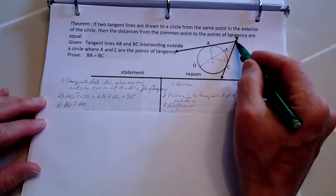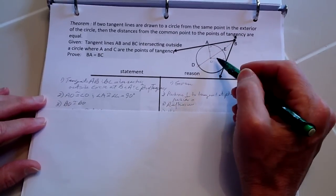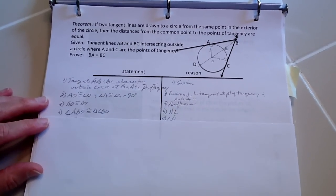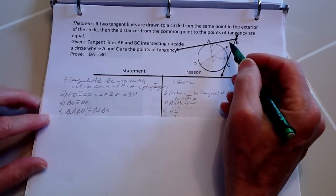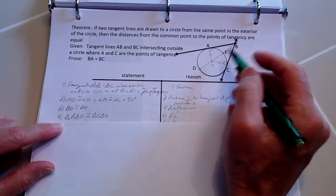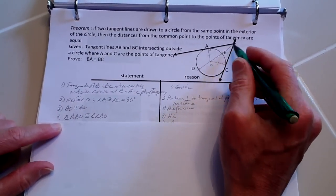We also know that line BO equals BO by the reflexive property. From that we know that triangle ABO is congruent to triangle CBO.